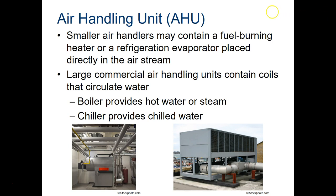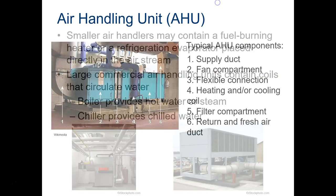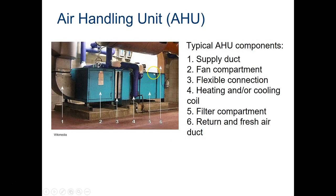Smaller air handlers might have the fuel-burning system built in. Larger commercial air handling units contain coils that circulate water, coming from either a boiler making hot water or steam, or a chiller providing cold water. I'm going to take a backwards approach through the air handler unit, starting from the return air. Somewhere inside the building are all the return air ducts linking into this area — that's return and fresh air, number six. Moving left, number five is a filter compartment where you filter out dust, pet dander, and other particles sucked in from the building.